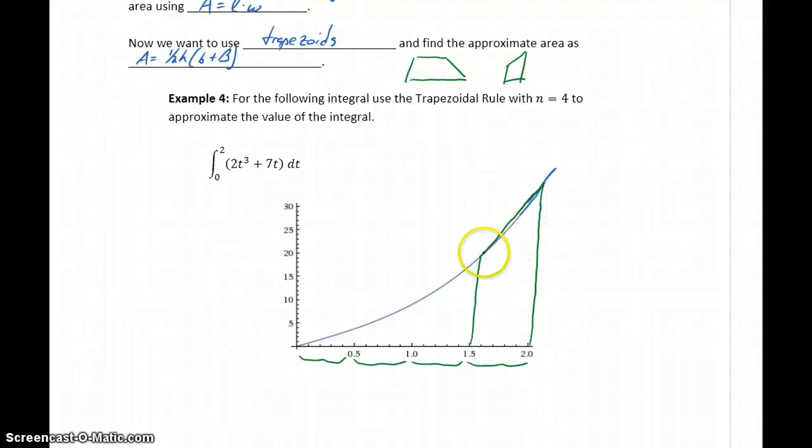The nice thing about trapezoids, especially for curves like this one, is that diagonal from the trapezoid ends up following very closely to the curve. So it really minimizes the amount of error that we have in our calculations.